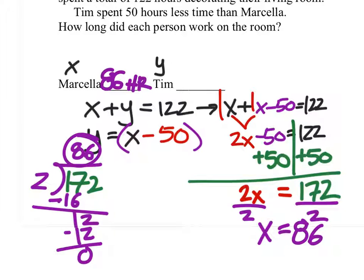And a quick way to find Tim's is, well, he just worked 50 hours less than that. So, lazy Tim, we have 86 minus those 50 hours. And we get 36. Tim worked 36 hours.